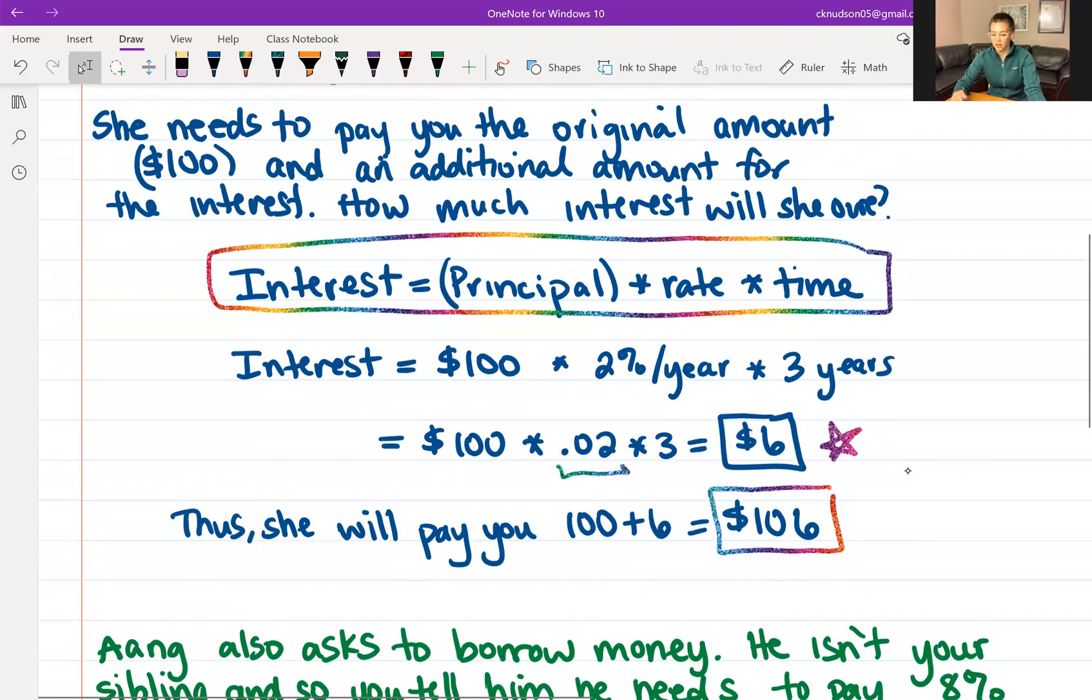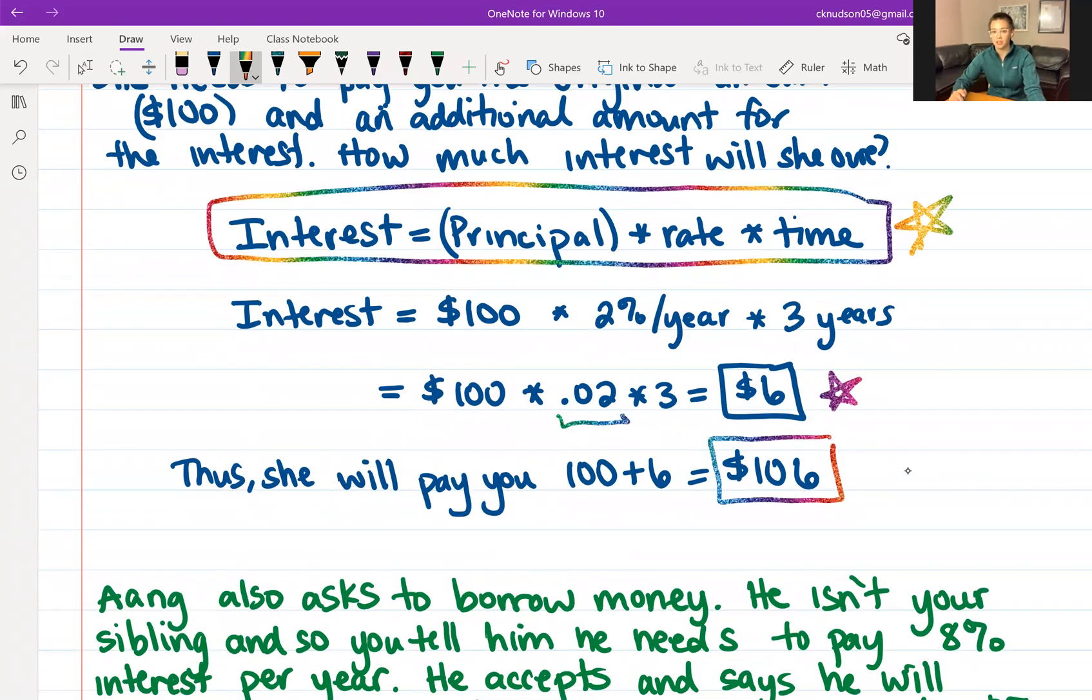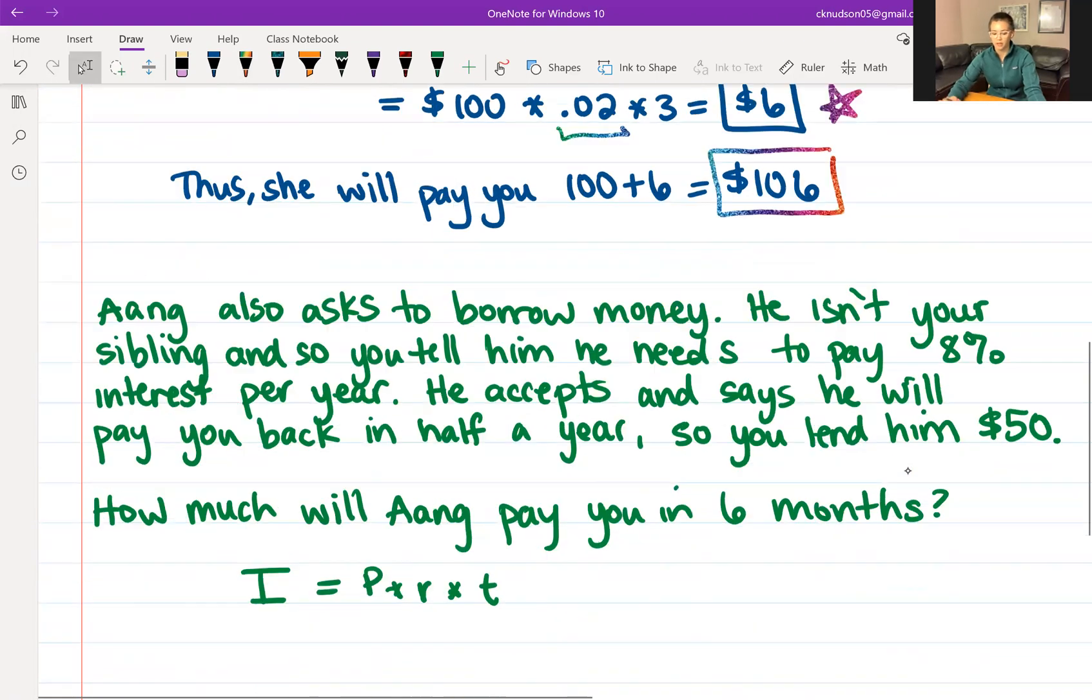Again, copy this equation down. It's pretty important. So Katara is going to borrow $100 and pay you $106 in a few years.